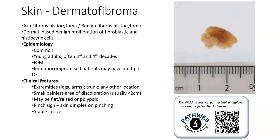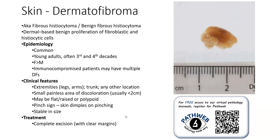Clinically, they tend to appear on the extremities, especially the legs, and can also occur in the trunk or other locations. They present as a small, painless area of discoloration that is usually less than two centimeters in diameter, and may be flat, raised, or polypoid. There is the pinch sign — if you pinch the skin on either side, the area of the lesion dimples downwards, which is quite a useful clinical sign. Dermatofibromas usually remain stable in size over many years, and the treatment is complete excision with clear margins.